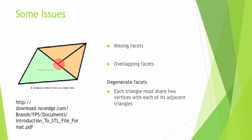Lastly, there is the degenerate facet. The rule for STL file format is that each triangle must share exactly two vertices with each of its adjacent triangles. As you can see in the picture, the yellow/beige triangles on the left both share two vertices correctly. However, for the case of the green triangle with the beige triangle, they do not share two vertices — they only share one vertex each. This is a problem and an issue with the STL file format.